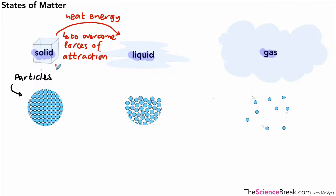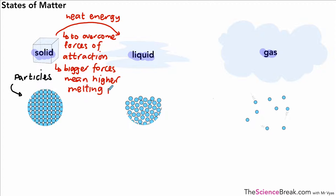It's very important to remember that the bigger the forces of attraction between the particles, the bigger — or the higher — the amount of energy required to go from solid to liquid, or in other words, to melt the solid. The same applies when we go from liquid to gas: we need to supply heat energy, and that process is called boiling.